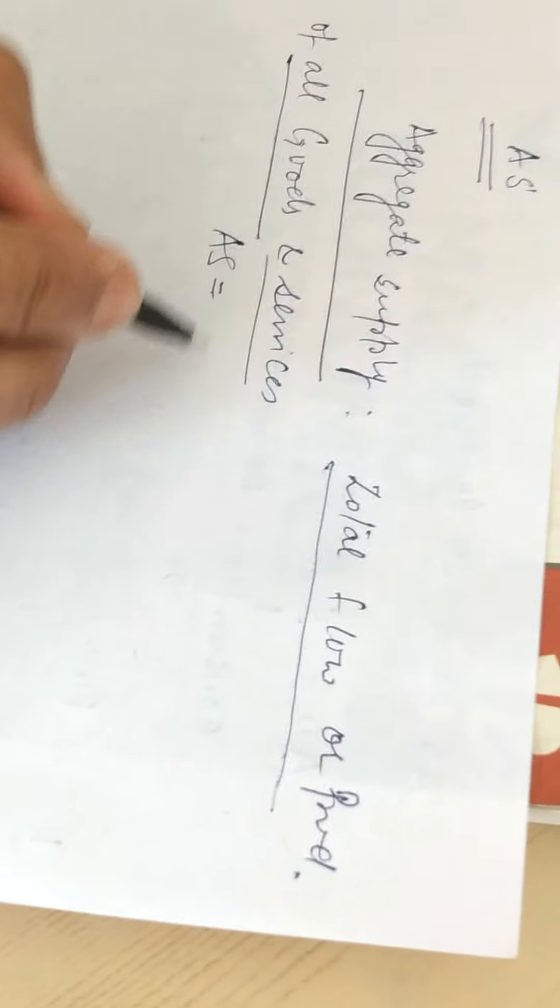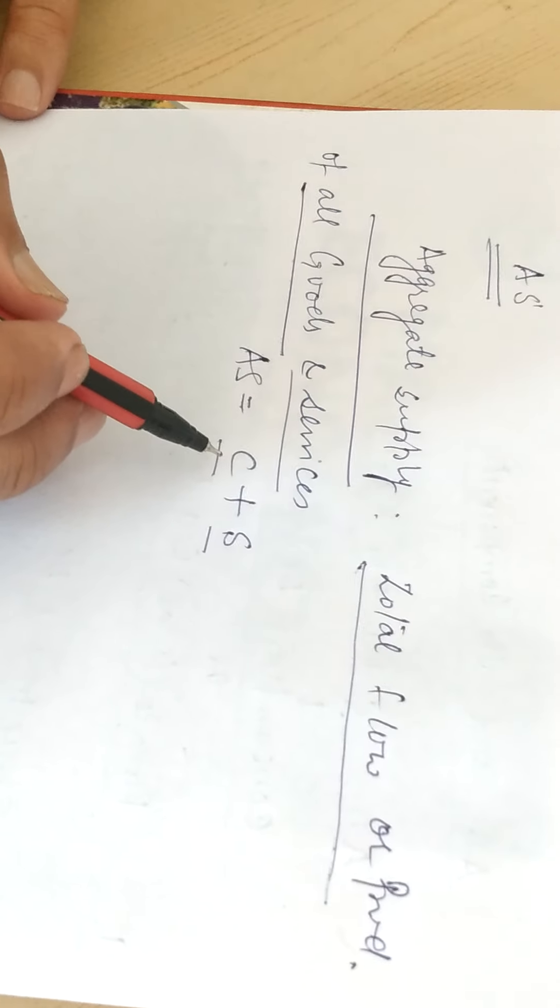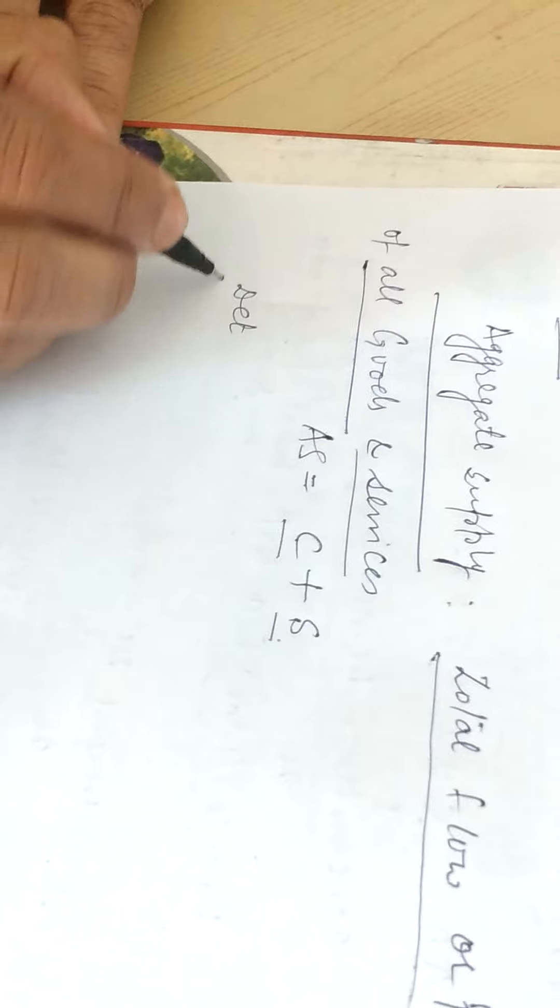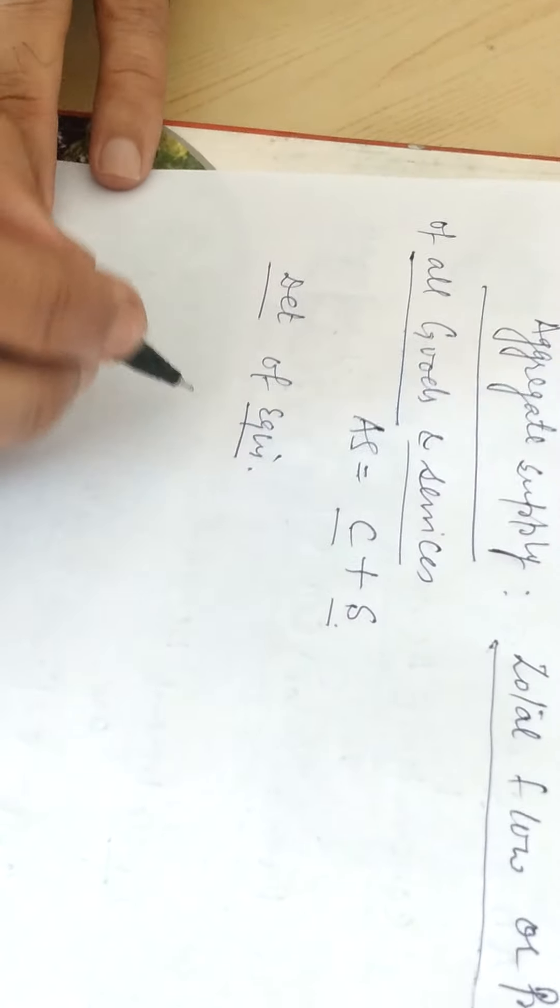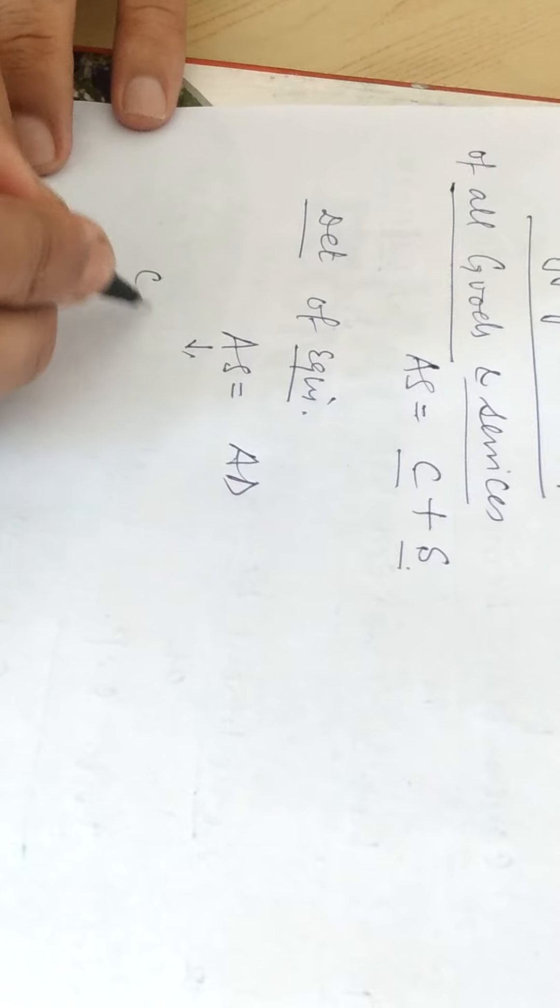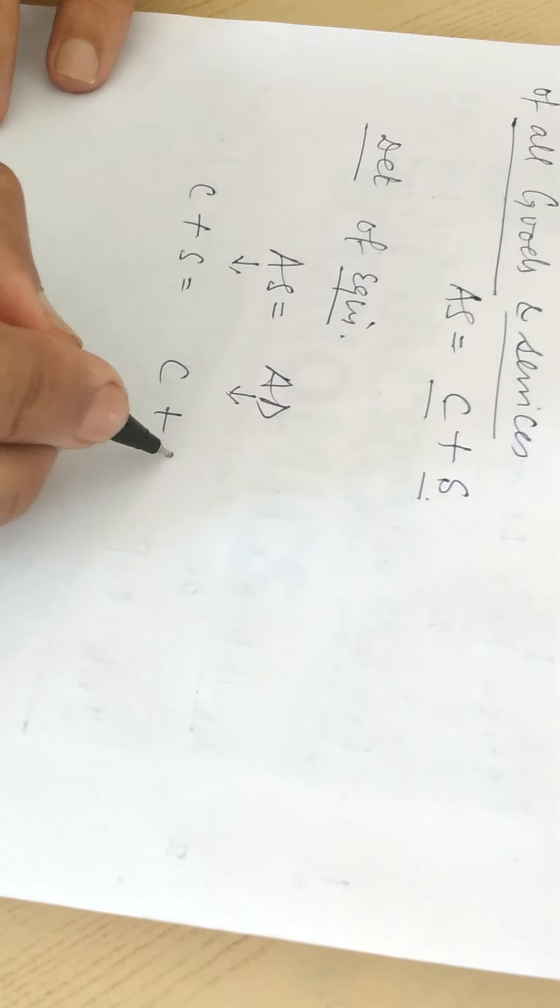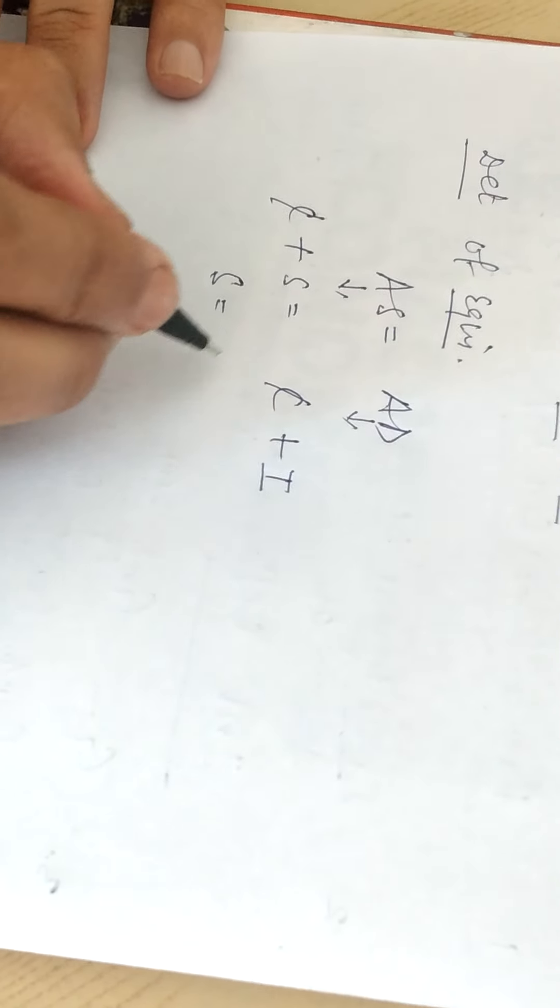Aggregate supply is bifurcated into two parts. Aggregate supply is equal to consumption plus saving. When we talk about the determination of equilibrium level of output and employment, we compare aggregate supply with aggregate demand. Aggregate supply includes two parts: consumption plus saving. Aggregate demand includes two parts: consumption plus investment. Consumption are cancelled from both sides, then saving is equal to investment.